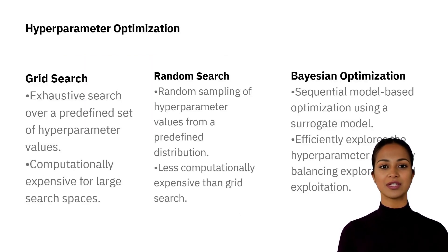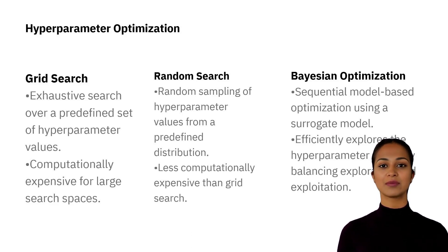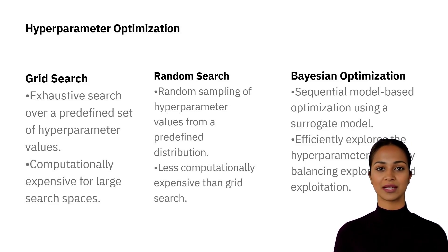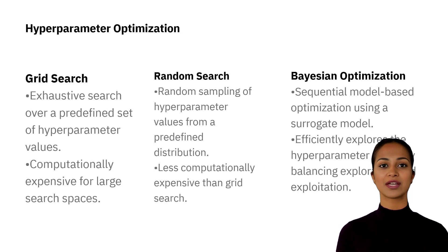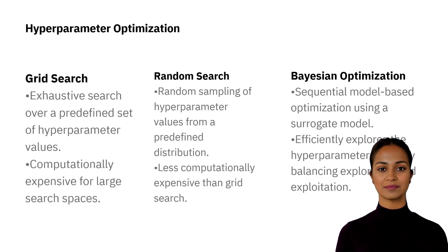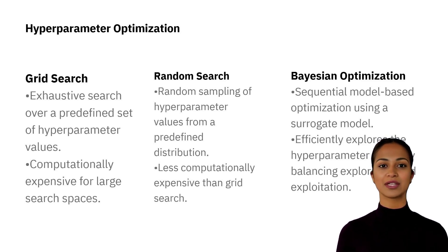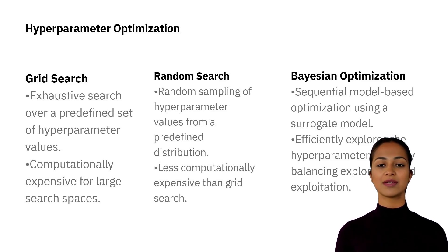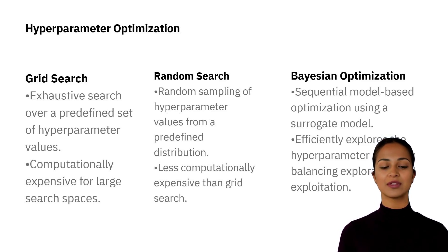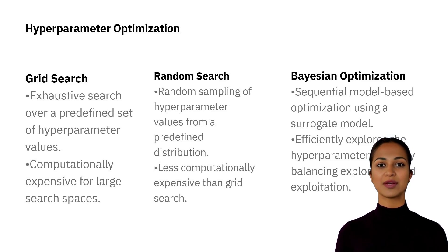We will be discussing strategies for AutoML model selection and the associated challenges with hyperparameter optimization. This is the process of tuning the model's performance by adjusting certain parameters, and can be done using grid search, random search, or Bayesian optimization. Grid search is an exhaustive search of hyperparameter values but can be computationally expensive for large search spaces. Random search randomly samples from a predefined distribution, while Bayesian optimization uses a surrogate model to explore the hyperparameter space.